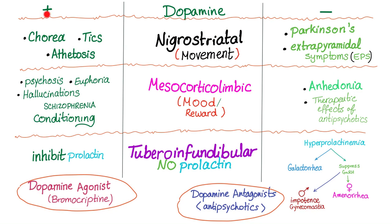Let's recap. Nigrostriatal movement pathway: more dopamine — chorea, athetosis; less dopamine — everything is slow, Parkinson's, EPS. Mesocorticolimbic: dopamine will heighten your mood — psychosis, euphoria, hallucinations, schizophrenia, conditioning — this is addiction, even to Facebook. Posting a photo, people like and comment, so you do it again. Less dopamine leads to anhedonia, the therapeutic effect of antipsychotics. Third, tuberoinfundibular: more dopamine, no prolactin; less dopamine, more prolactin, hyperprolactinemia, suppressing gonadotropin-releasing hormone — less estrogen in females, less testosterone in males.